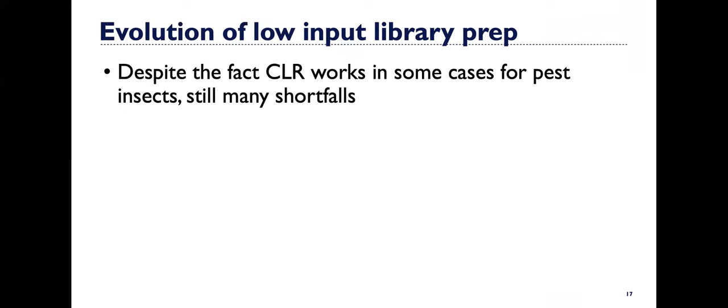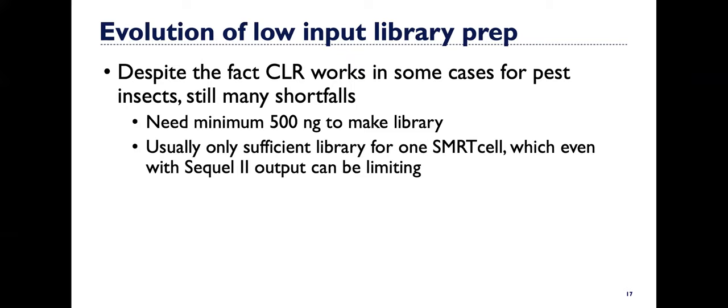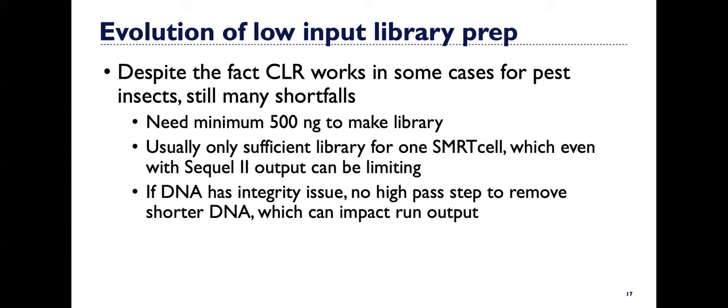Despite the fact that it works in some cases, there's still many shortfalls of CLR sequencing. You do need a minimum probably of about 500 nanograms of DNA to make a library. Usually when you're starting specifically with 500 nanograms, only a sufficient amount of library will be made to run one smart cell, which even with Sequel 2 output can be limiting for things with larger genome sizes. And if DNA has an integrity issue, if it's degraded, if maybe you have some high fragments and some small fragments, there's no necessarily high pass step to remove shorter DNA, which can impact the run output.